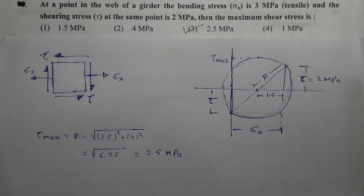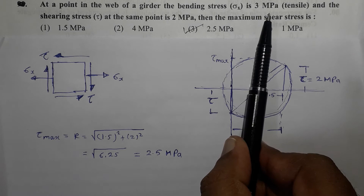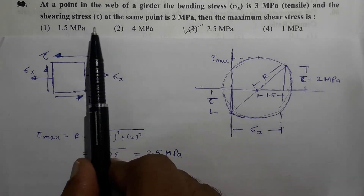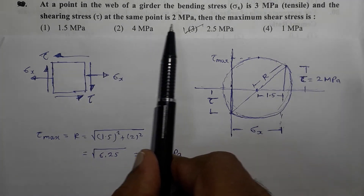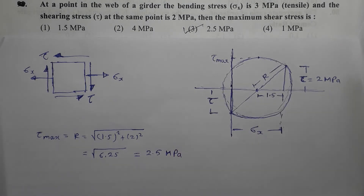Hello students. In this video, I am going to discuss the questions from the subject Strength of Materials, which were asked in MES 2018. Question number 1: At a point in the wave of a girder, the bending stress sigma x is 3 MPa tensile and the shearing stress tau at the same point is 2 MPa. Then the maximum shear stress is. In order to get the correct answer, I want to use the Mohr circle method.